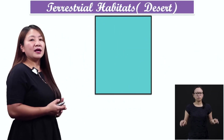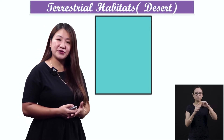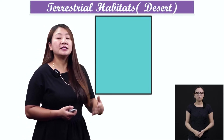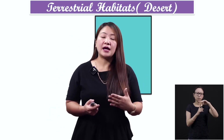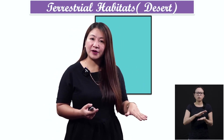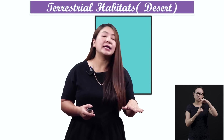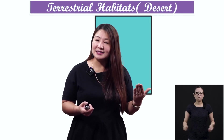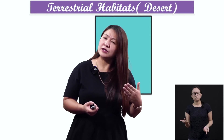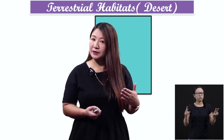First, we will look at a terrestrial habitat. Terrestrial habitat is a habitat which is on land — not on water, not on air — but terrestrial means land. On land, we find habitats like deserts, mountains, and grasslands. In all these different habitats, we find different plants and animals.